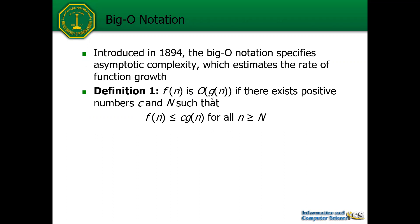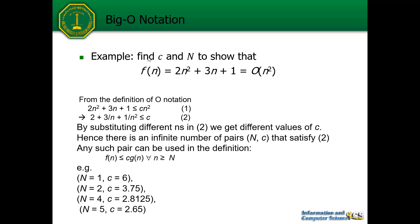Definition one: f(n) is Big O of g(n) if there exist positive numbers c and N such that f(n) is smaller than or equal to c·g(n) for all n greater than or equal to capital N. In simple English, when we multiply g(n) by a constant c, this function is always going to be bigger than or equal to f(n) for values of n above a threshold N.